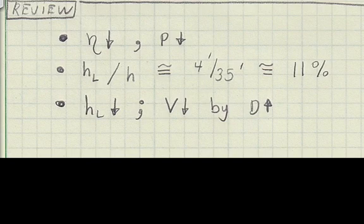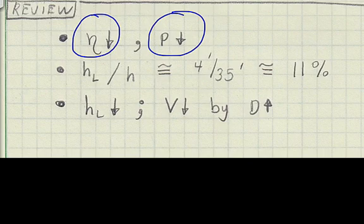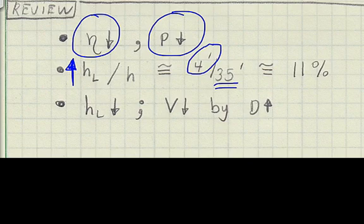Engineers like to understand energy losses. As efficiency of the turbine goes down, the power goes down. Similarly, as head loss increases, we also decrease the power. And in this case, the head loss is 4 feet. The total elevation head is 35 feet. So we've lost about 11% of the available energy.